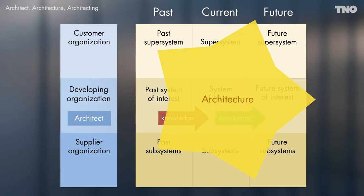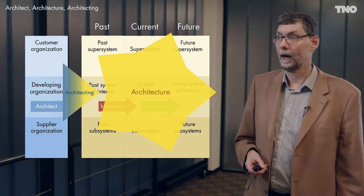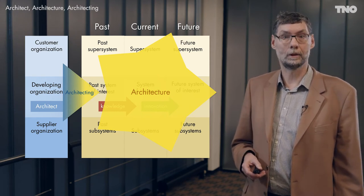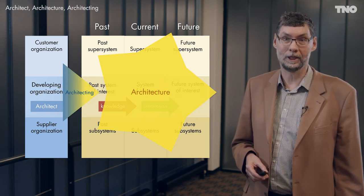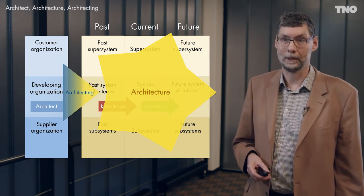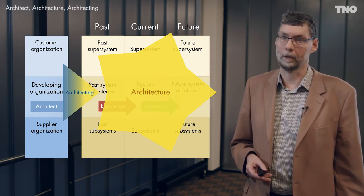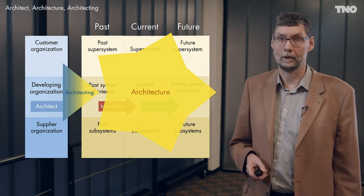The architecture is being defined by an activity called architecting. So architecting is the activity of defining the architecture. Architecting is done by the developing organization, by the customers, and by the suppliers. The developing organization interacts with customers and suppliers and together that results in the architecture. The architect is the owner of the architecture and facilitates the architecting process.